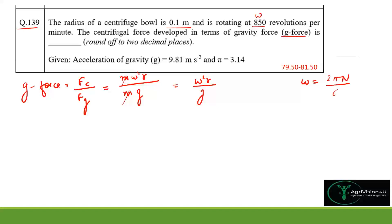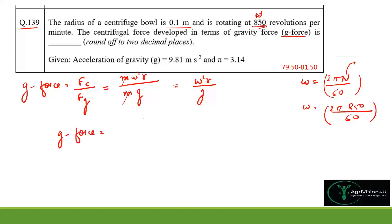Omega is 2πN/60, where N is the number of revolutions per minute, given as 850. So omega = 2π×850/60. We substitute this into the formula and multiply by r = 0.1 to get the g-force.